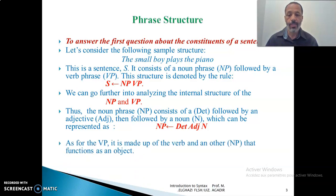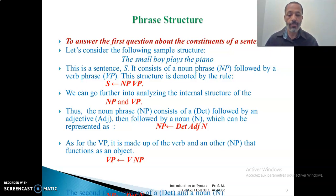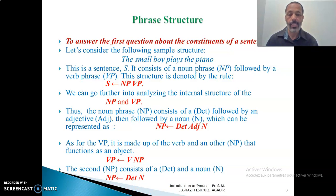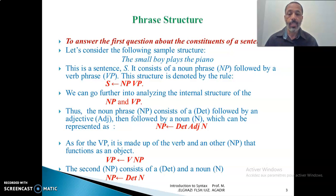The VP also consists of a verb followed by a noun phrase. The verb is 'plays', conjugated in simple present, and then the noun phrase 'the piano', which itself consists of the determiner 'the' and the noun 'piano'. So this is how we analyze a sentence into its constituents, starting from the largest constituents — subject and predicate — down to the smallest, until we reach the words, whether determiners, adjectives, adverbs, verbs, or nouns.